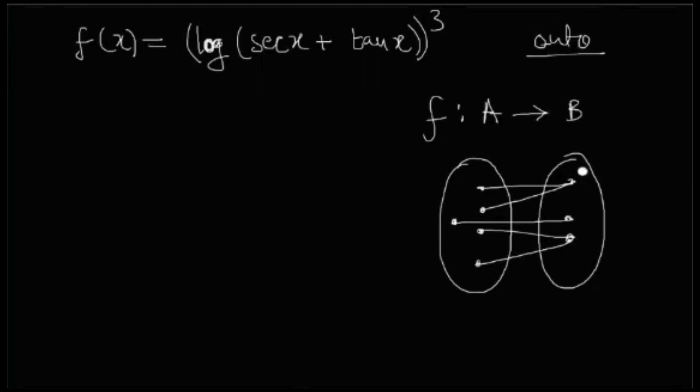As long as the criteria is fulfilled, the criteria being that all the elements in the range of the image of A, if all the elements in the image of A has been mapped, then it's an onto function, or we call it the surjective function.